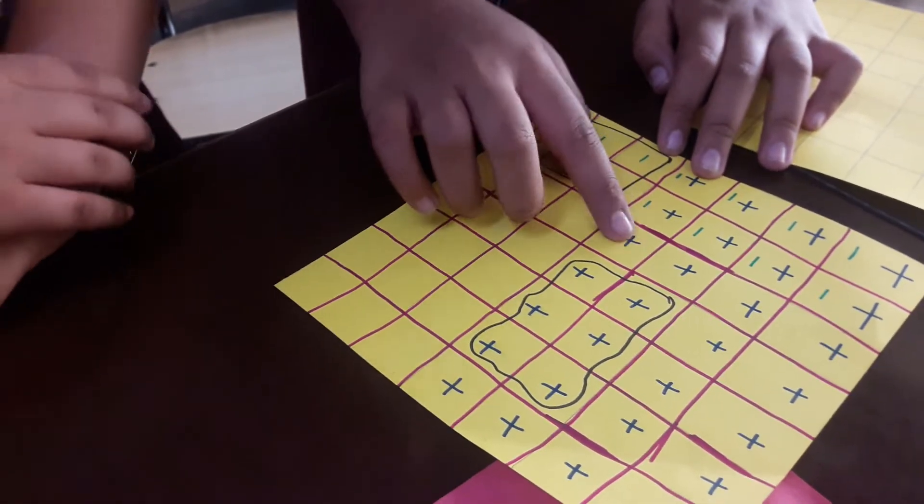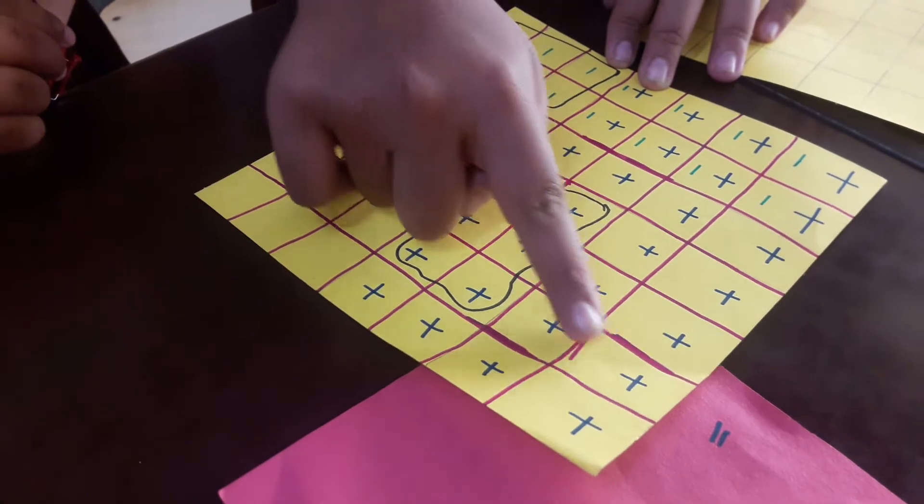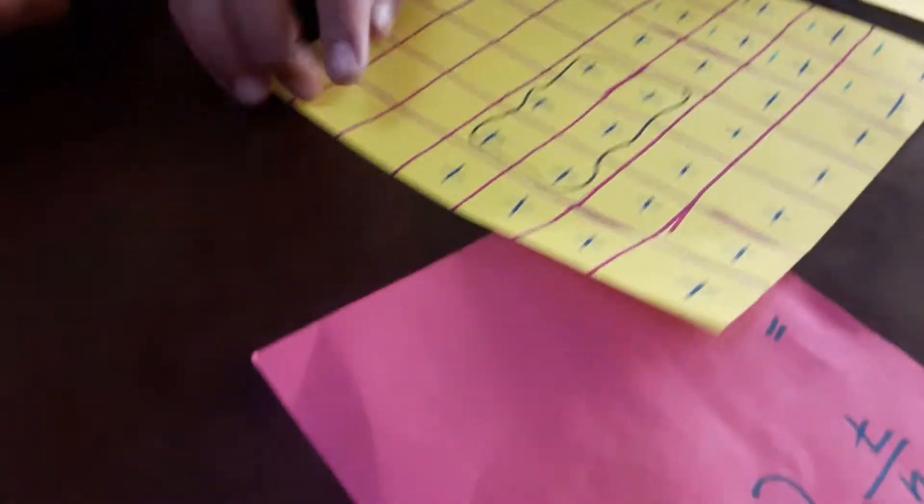Now we are left with 1, 2, 3, 4, 5, 6, 7, 8, 9, 10, 11, 12, 13, 14 enclosed plus signs.